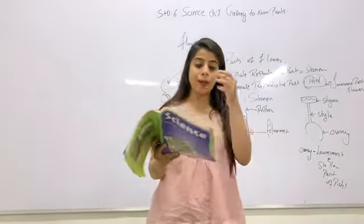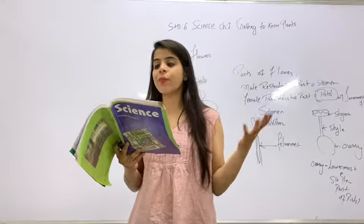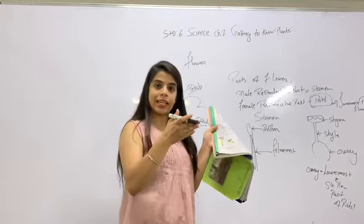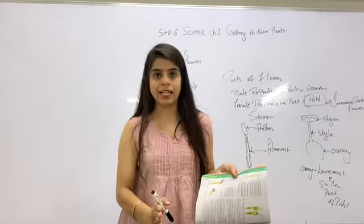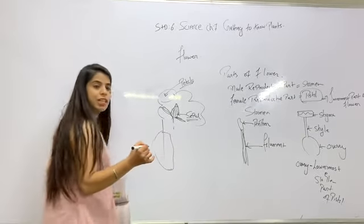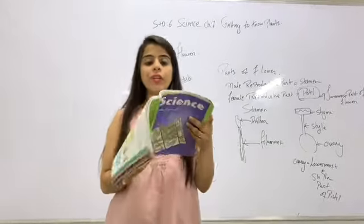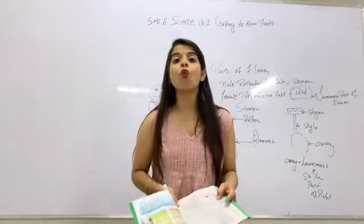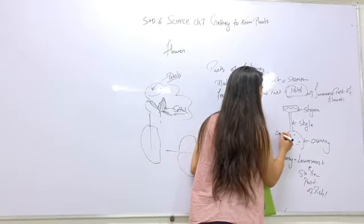The ovary can be cut in two ways — longitudinal and transverse. The first figure shows the ovary cut from the center longitudinally. The second figure shows a transverse section. Inside the ovary there are small leaf-like structures which are the ovules.